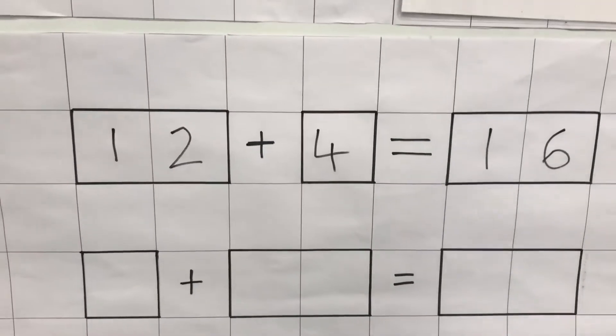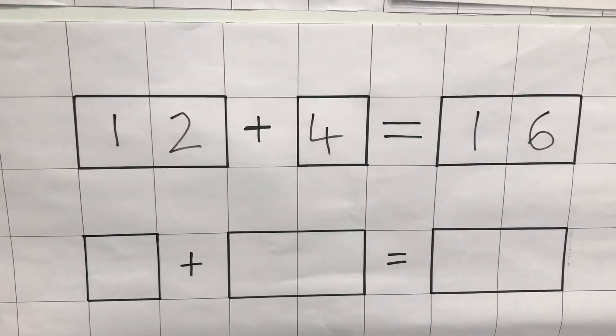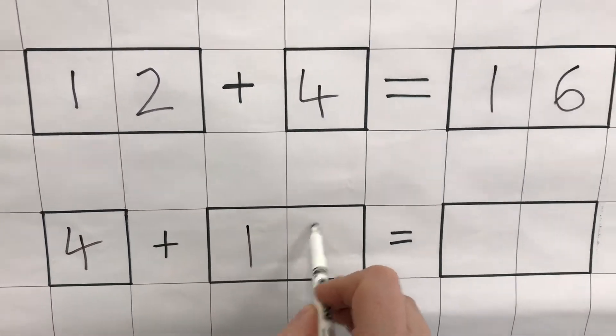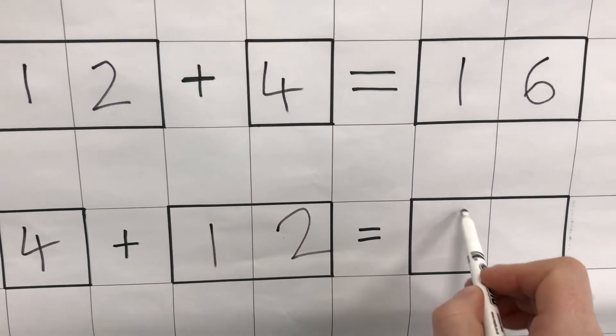I can make another addition with the same three numbers. But this time, I'm going to start with the 4. 4 add 12 is the same as 16.